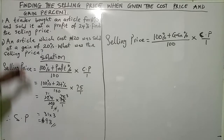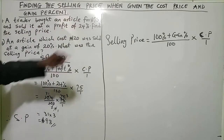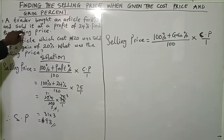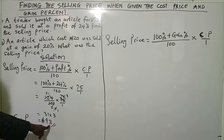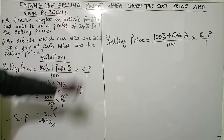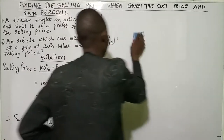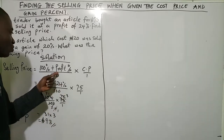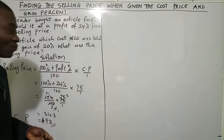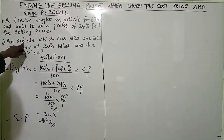Therefore the selling price equals 93 naira. So a trader bought an article for 75 naira and sold it at a profit of 24 percent — the selling price is 93 naira. The main thing you need to know is just the formula. Once you know the formula it becomes so easy for you to calculate anything at all.